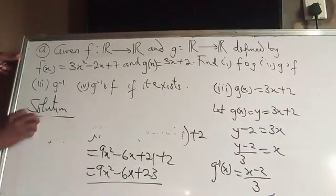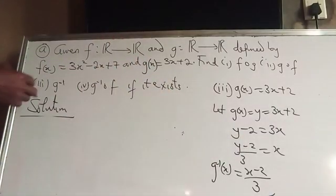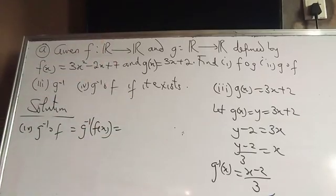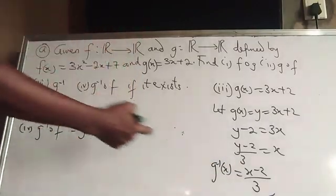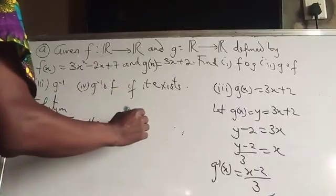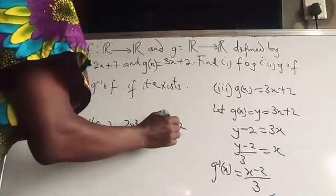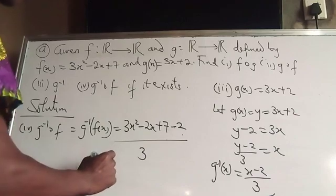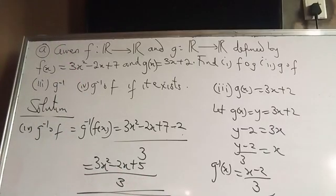The last part: G inverse of F. Put F(x) inside G inverse. G⁻¹(x) = (x - 2)/3, so replace X with F(x) = 3x² - 2x + 7. That gives (3x² - 2x + 7 - 2)/3 = (3x² - 2x + 5)/3. That solves the problem.